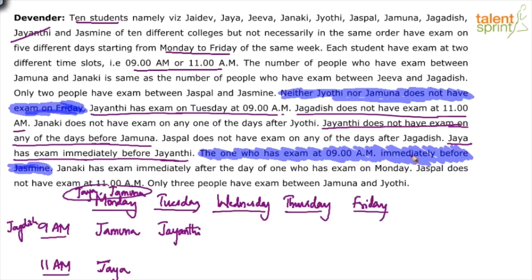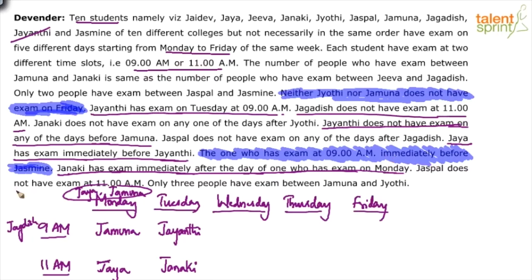The clue 'the one who has exam at 9am immediately before Jasmine' still looks incomplete. Moving on: Janaki has exam immediately after the day of the one who has exam on Monday, so if it is immediately after Monday it should be Tuesday. On Tuesday we already have Jayanti, so the other slot on Tuesday should be for Janaki. Jaspal does not have exam at 11am, so Jaspal will have exam at 9am.